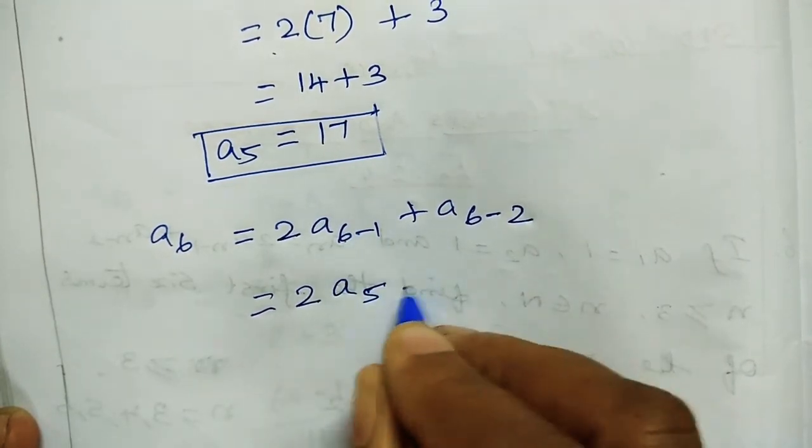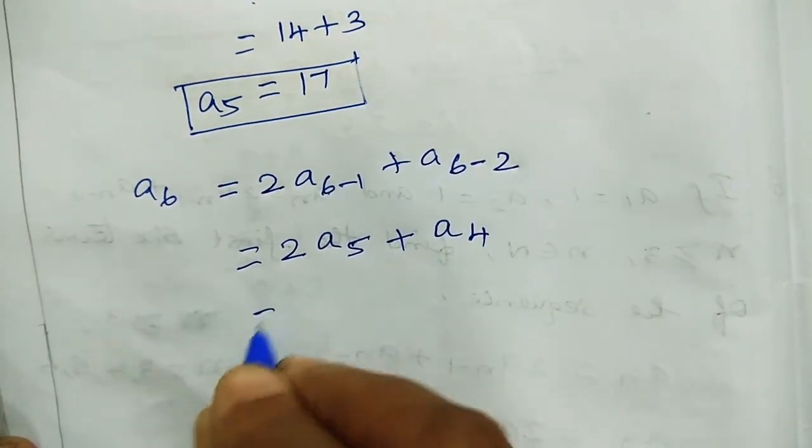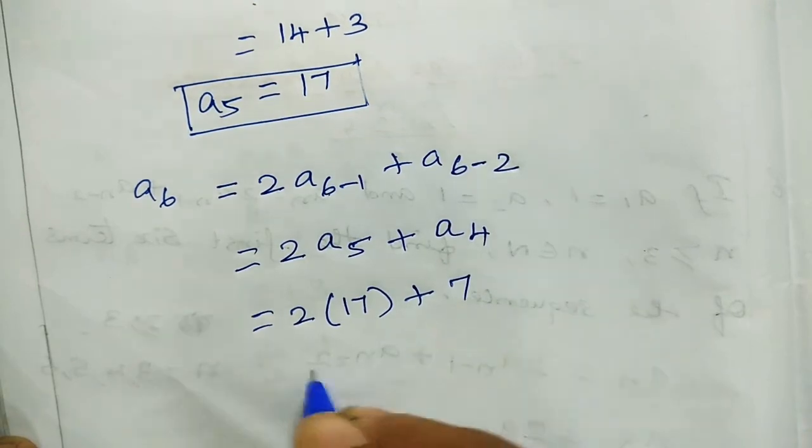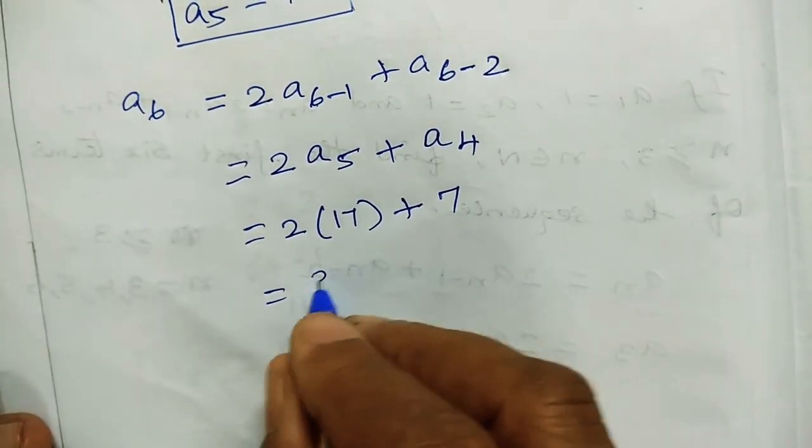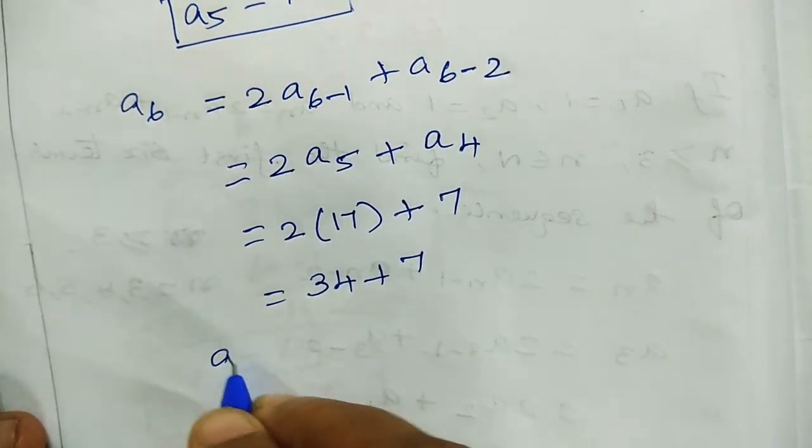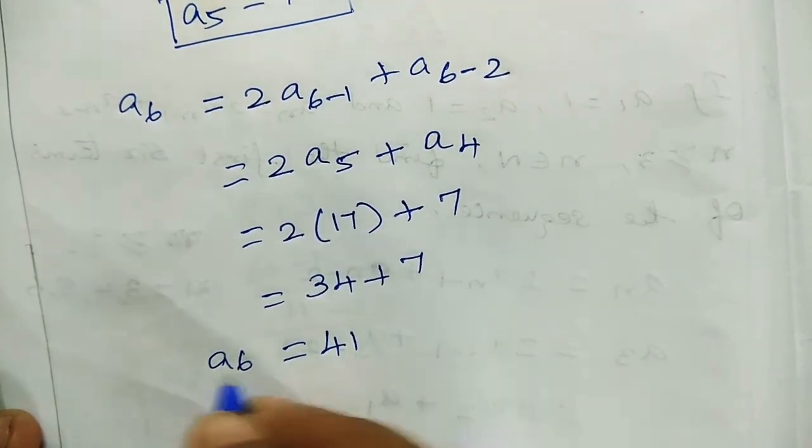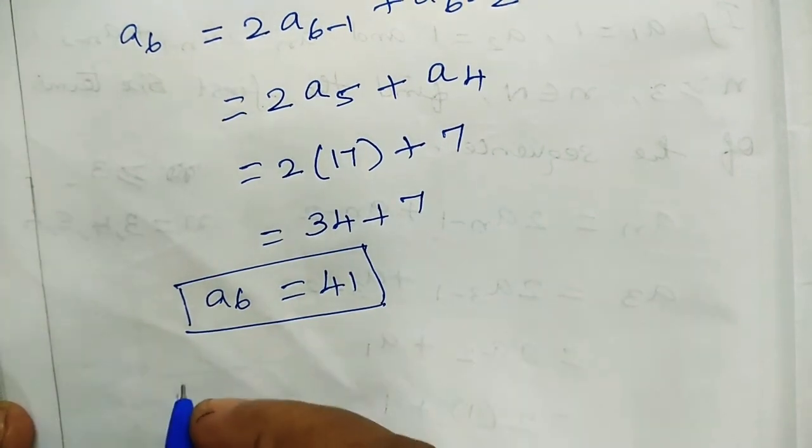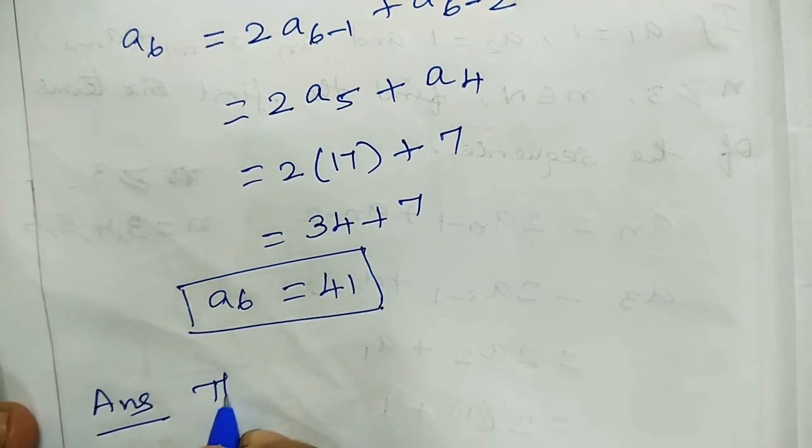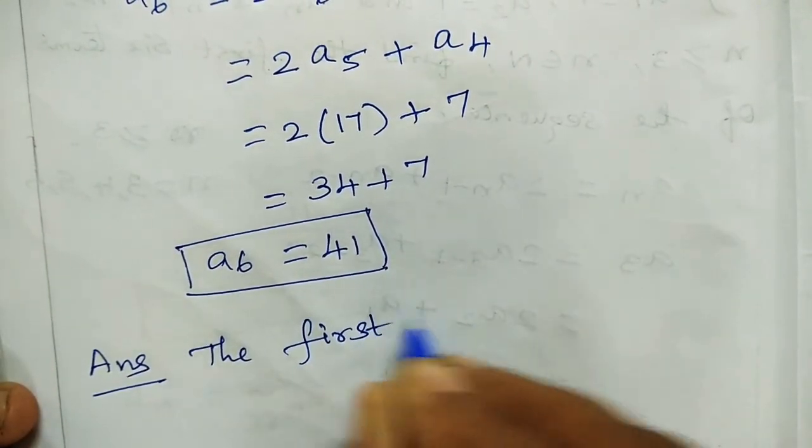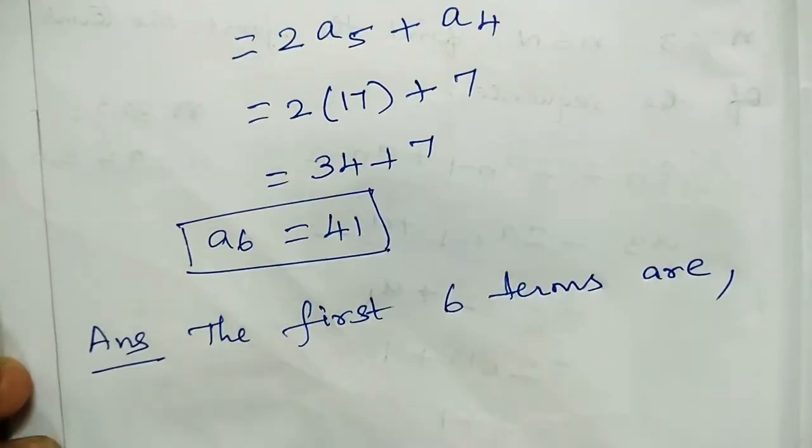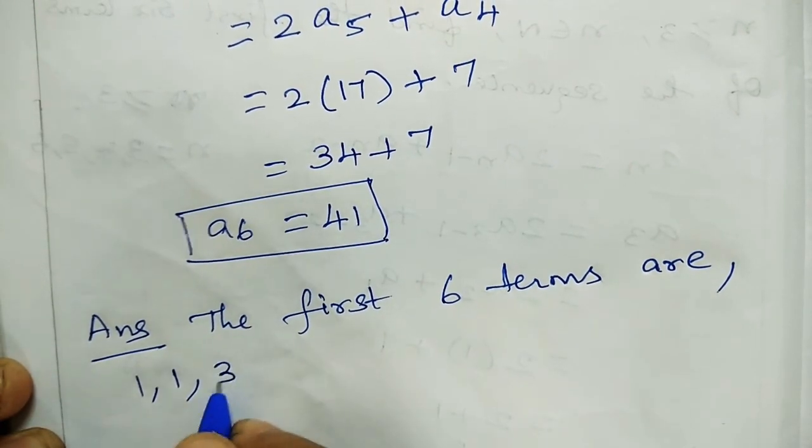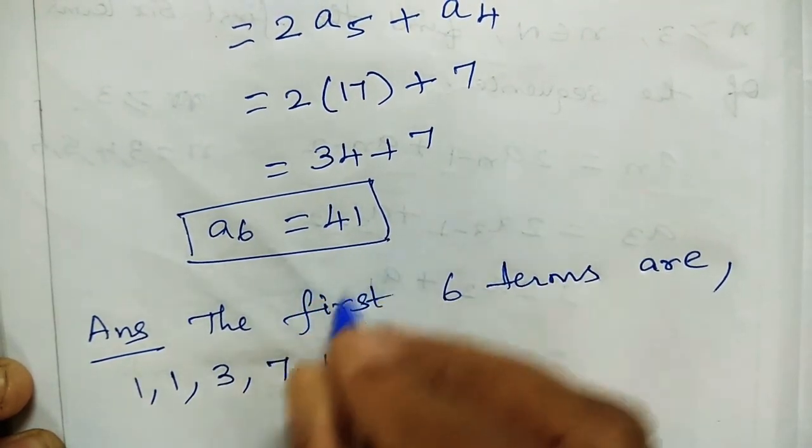a6 equals 2 times a5 plus a4. 2 times a5, which is 17, plus a4, which is 7. That's 2 times 17 plus 7, which equals 34 plus 7, equals 41. a6 has value 41. The first 6 terms are 1, 1, 3, 7, 17, and 41.